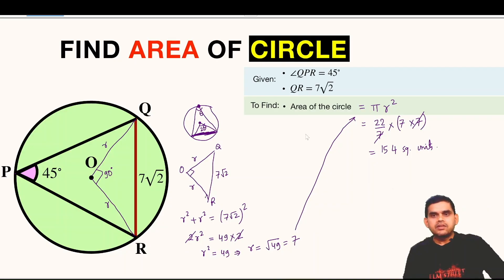So finally the area of circle is 154 square units. If you like this video do subscribe to my channel. See you in the next video.